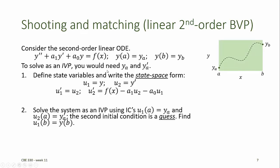Next, to implement the shooting and matching method, we solve this system as an initial value problem using initial conditions: u1 equals y(a) at a, and u2 at a is y'(a). We then use one of the initial value problem solver methods from Chapter 7 to find the values of y at every place in the domain, including at the right-hand boundary where u1 at b should equal y(b).